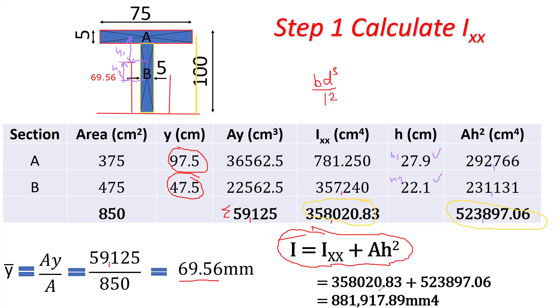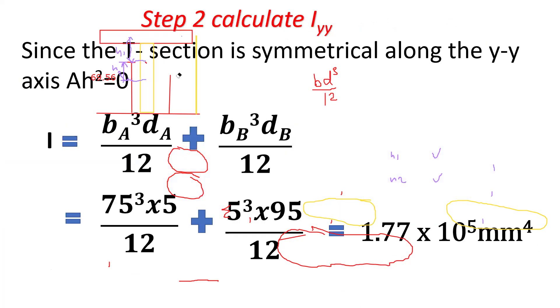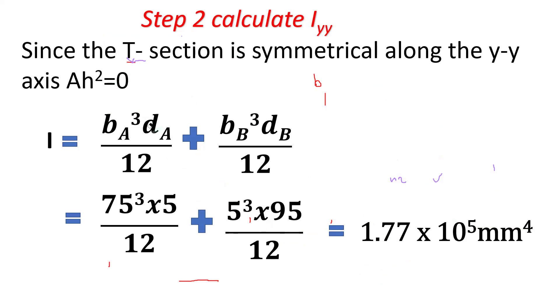Now let's calculate our Iyy. So the T-section is symmetric along the y-y axis. So basically this component, Ah squared, will be zero. So basically we just use the formula direct. I equals bd cubed divided by 12 for the two sections. That will give us 75 cubed times 5 divided by 12, and 5 cubed times 95 divided by 12, and you get 1.77 times 10 to the power 5 millimeters to the fourth.